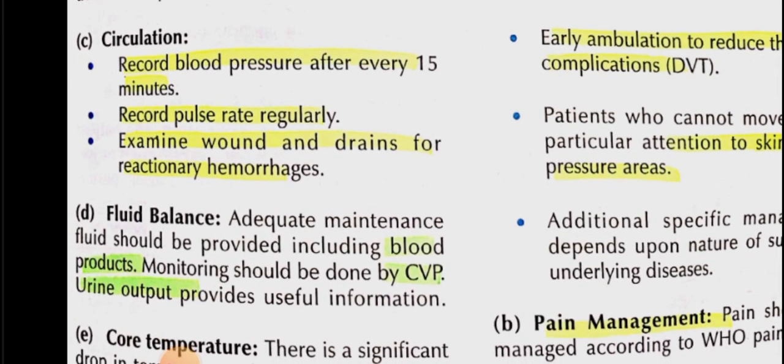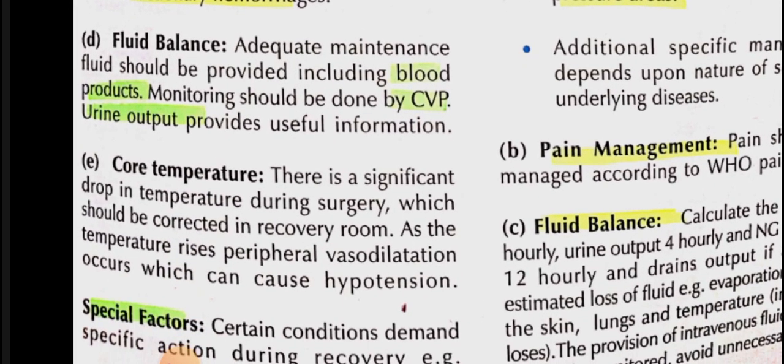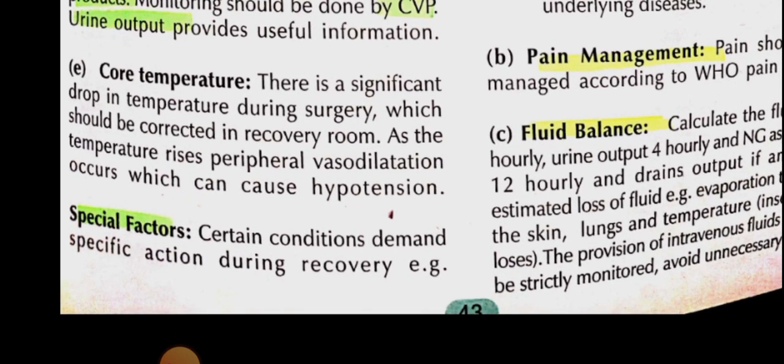For circulation: blood pressure should be calculated every 15 minutes, and pulse rate recorded regularly. Any wounds or drains should be checked for hemorrhage. For fluid balance: provide maintenance fluids including blood products, monitor fluids by CVP, and maintain urine output. For core temperature: during surgery, temperature drops, so we must monitor it. As temperature rises, peripheral vasodilation can cause hypotension — keep this in mind. These five components are: airway, breathing, circulation, fluid balance, and core temperature.